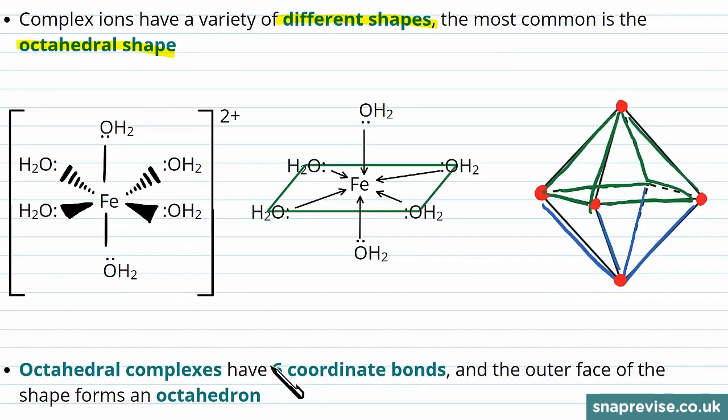Octahedral complexes have six coordinate bonds and it's each one of these six ligands that bonds to it that forms one of the corners of the octahedron that gives the compound its name.